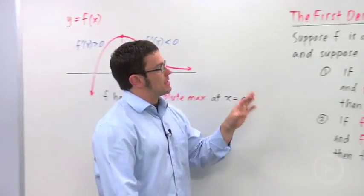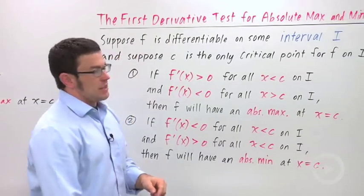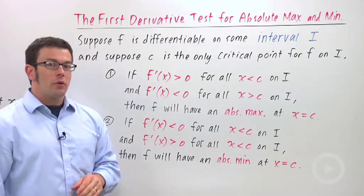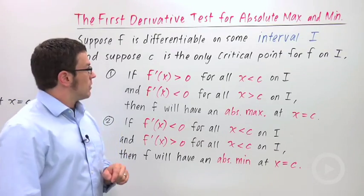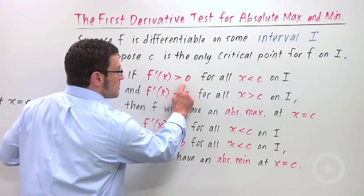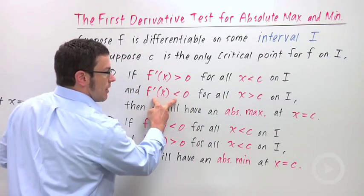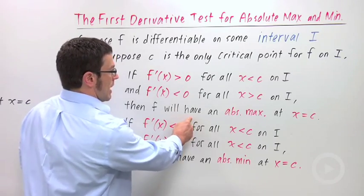This idea is summarized in the first derivative test. Suppose f is differentiable on some interval I, and suppose c is the only critical point for f on that interval. If f prime is positive for all x less than c, so positive on the left, and if it's negative on the right, then f will have an absolute maximum.